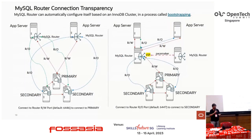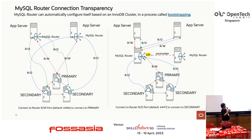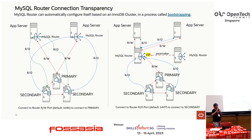Regarding MySQL Routers, we advise installing them on the same host as the application so the application can connect to a local MySQL Router. Optionally, MySQL Routers can run outside the application servers, but you then need to provide high availability for the routers — more than one router with load balancing provided by a third-party tool such as Pacemaker or Keepalived.